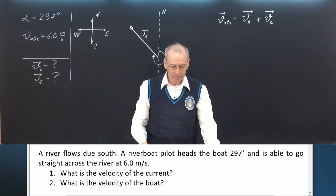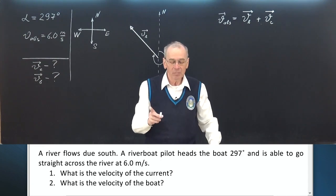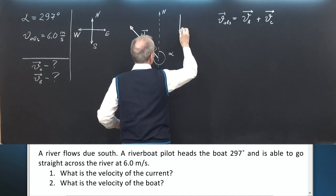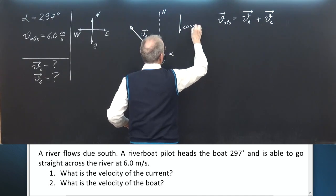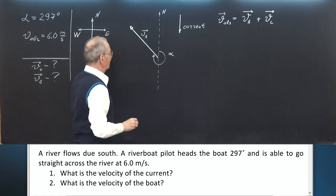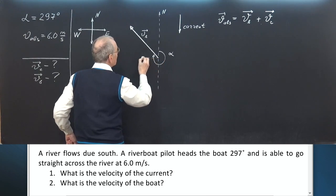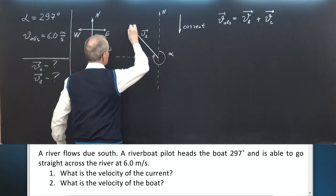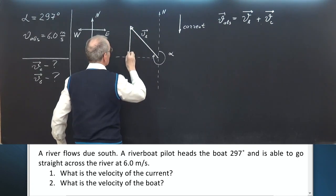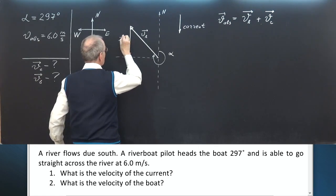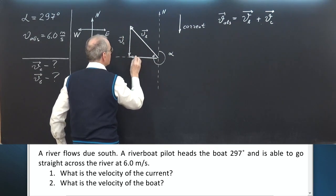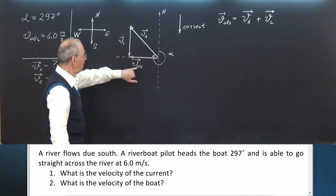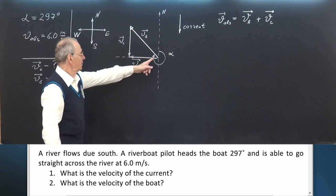We know that the riverboat pilot is able to go straight across the river. The current is directed to the south, and straight across the river means the westward direction. We can show these vectors accordingly: velocity of the current, and absolute velocity. The absolute velocity is 6 meters per second, directed to the west.